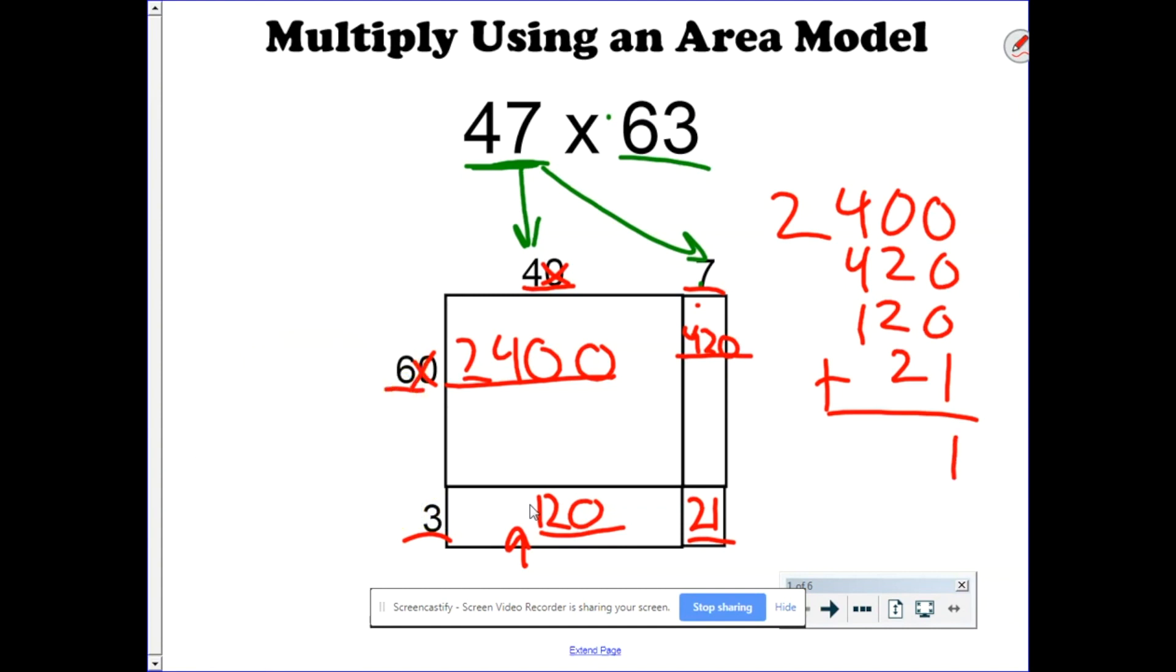0 plus 0 plus 0 is 1, 2 plus 2 plus 2 is 6. 4 plus 4 is 8, plus 1 more is 9. So we have 2,961.